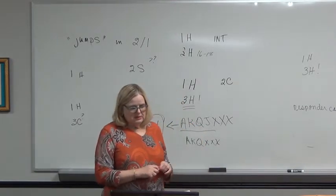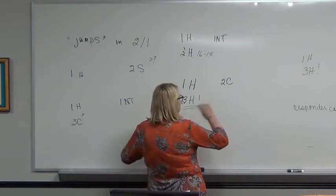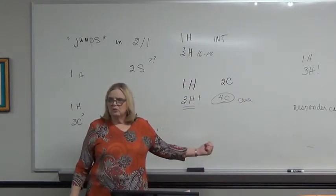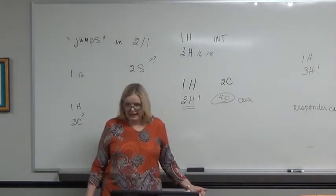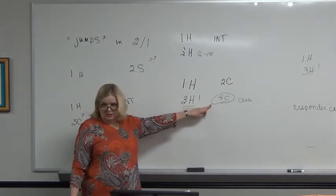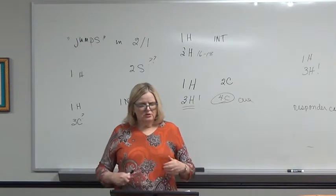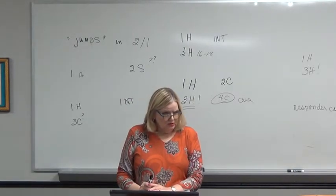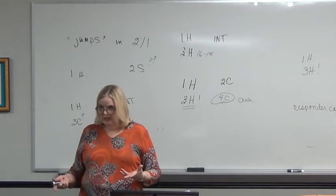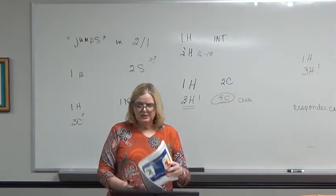Now, he makes the point that here if partner bids four clubs, this should be a cuebid. He shouldn't be insisting on his suit. We have said we're going to play in this suit, it's a major. You don't take a partner out of a major and play in a minor. So this would be a cuebid and it would deny the ace of spades because he skipped spades.